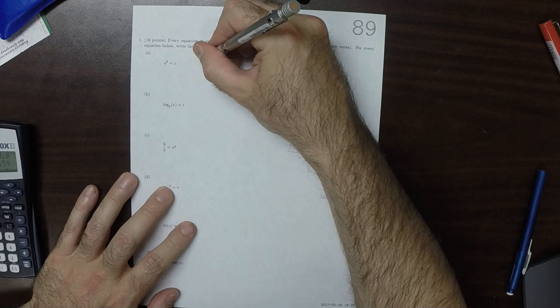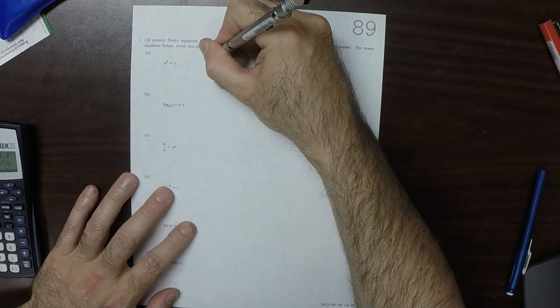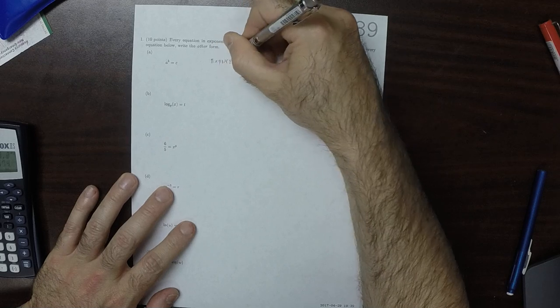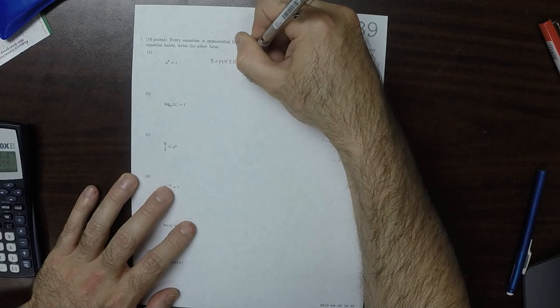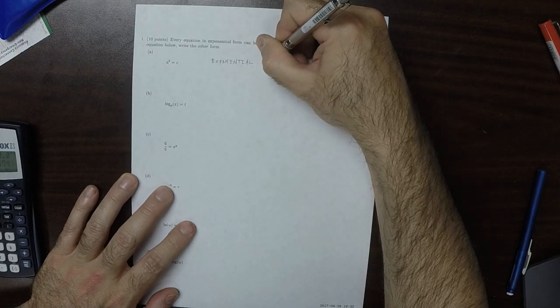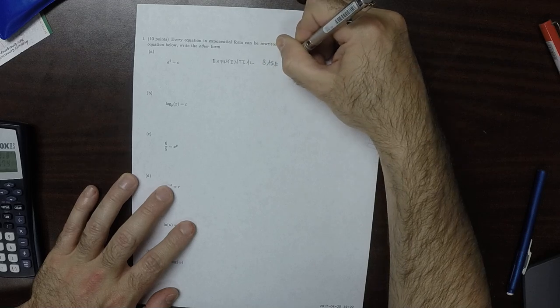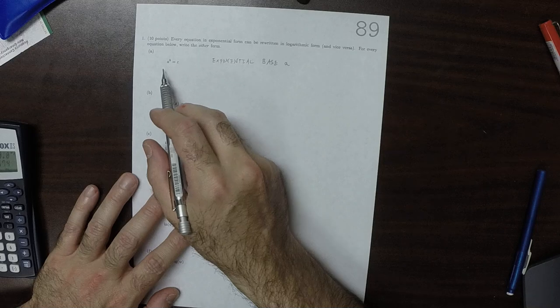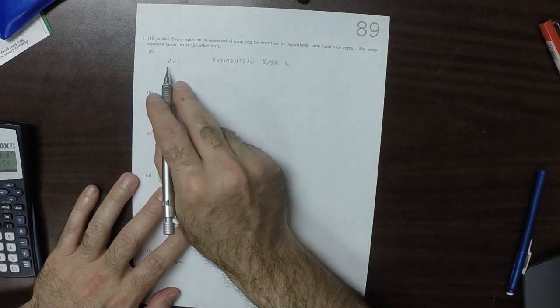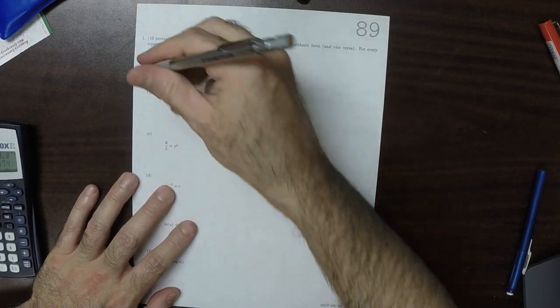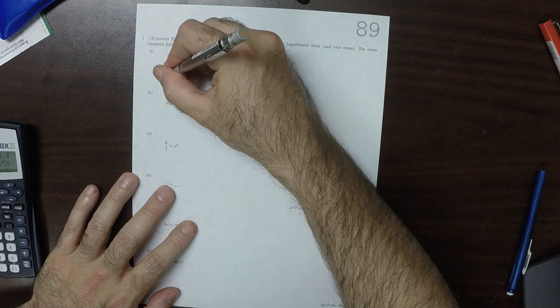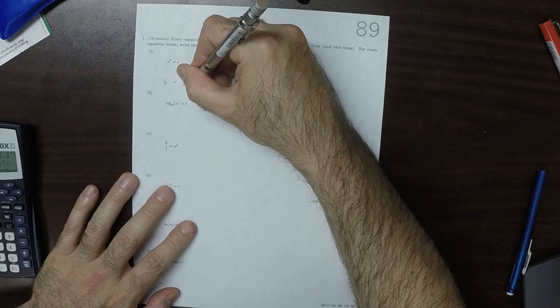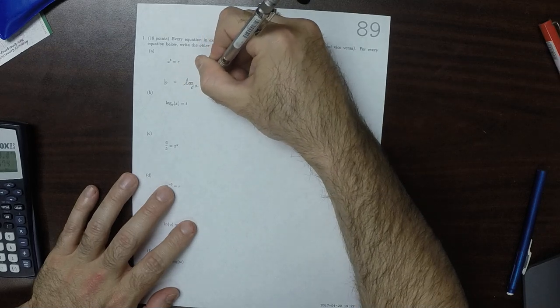This equation is an exponential base A. So to write it in logarithmic, it will still be in base A, but the base changes sides. So now it will be B is equal to the logarithm base A of C.